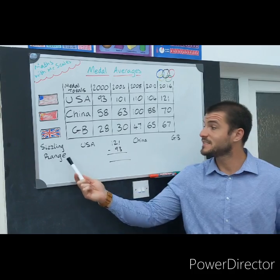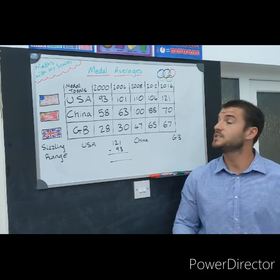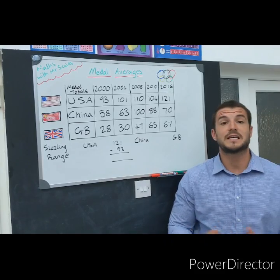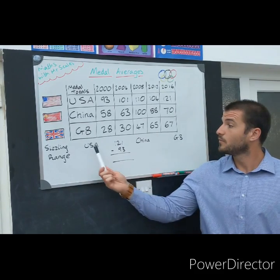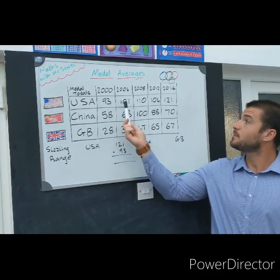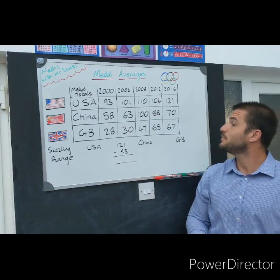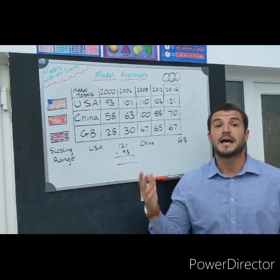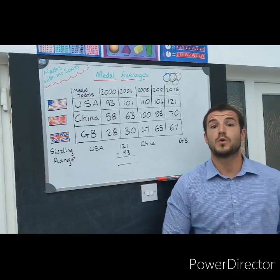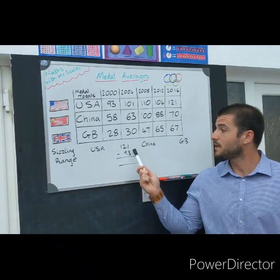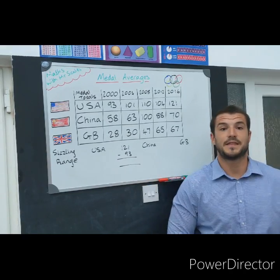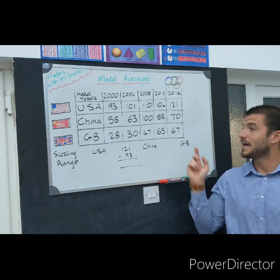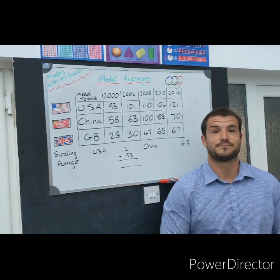Okay, so for those of you on our sizzling challenge, you're working out the range, which is the largest number of total medals for each country take away the smallest. For example, USA — we look at the number of medals they managed to achieve each Olympics. The largest number out of those five is 121, and the smallest number is 93. So to work out the range, you take the largest number take away the smallest, and that will give you your answer. So our sizzling challenge: you do that for USA, China, and GB.